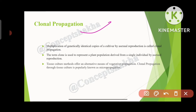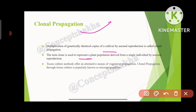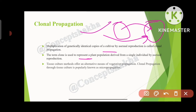First of all, what is clonal propagation? The multiplication of genetically identical copies of a cultivar by asexual reproduction is called clonal propagation. The term clone is used to represent a plant population derived from a single individual by asexual reproduction. Since no sexual reproduction is taking place, no variations will occur and identical copies will form.